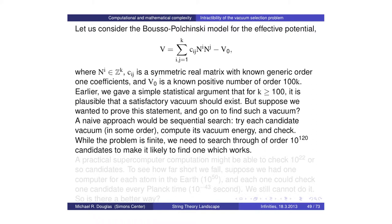We'll come back to the Bousso-Polchinski model. Recall we have a model for the set of flux vacua where a vacuum is labeled by a vector of integers n in some 500-dimensional space. We've postulated a symmetric real matrix and a negative energy term, and the goal is simply to find a vector of integers which makes V very small — 10 to the minus 120 in Planck units. It's very easy to argue statistically that such a thing should exist.